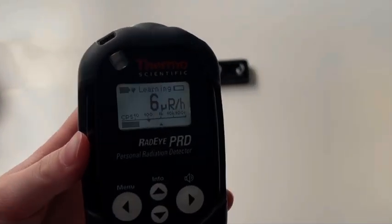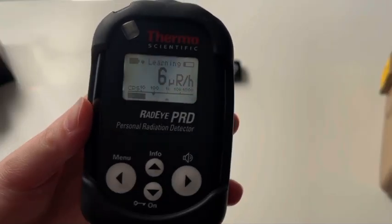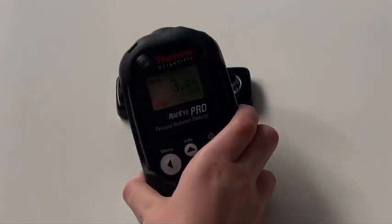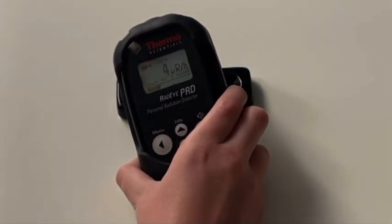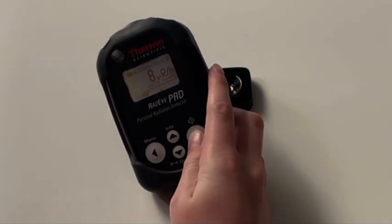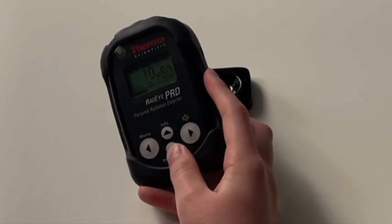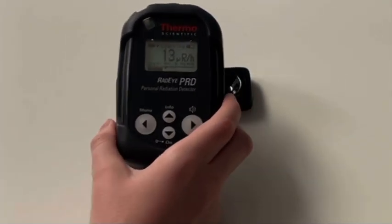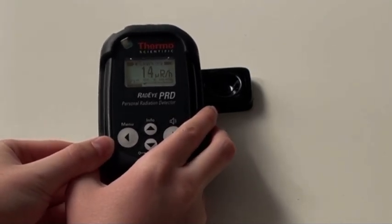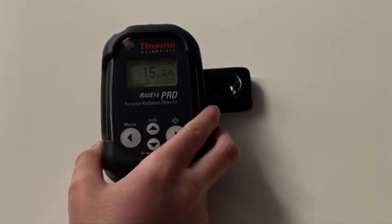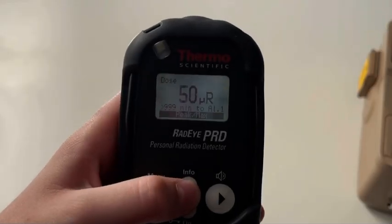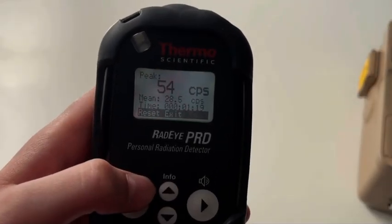Our next meter for measuring this radiation is the Radeye PRD, which is a gamma scintillation detector using a NaI(Tl) crystal. 15 microsieverts per hour. Peak count rate was 54 counts per second.